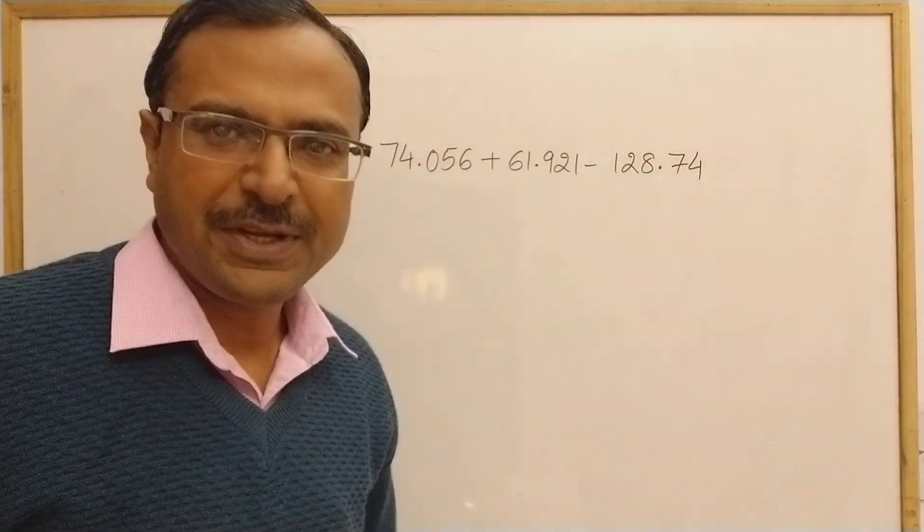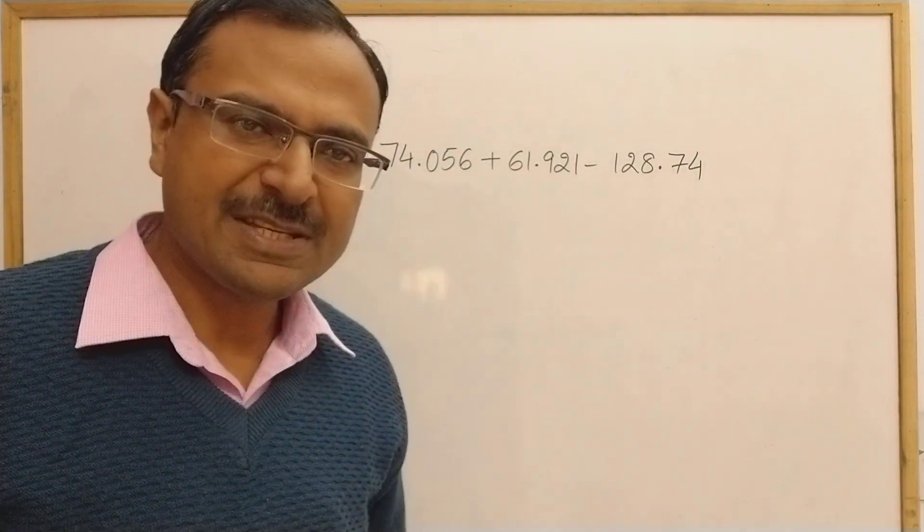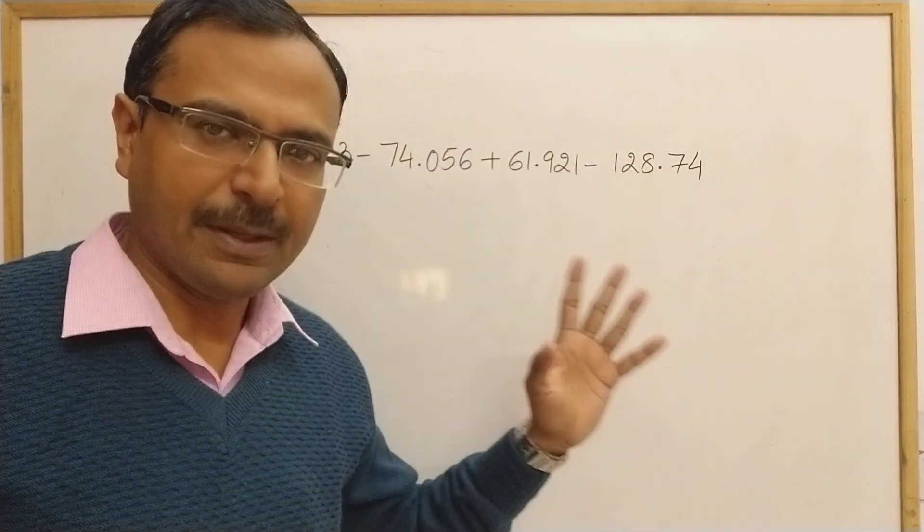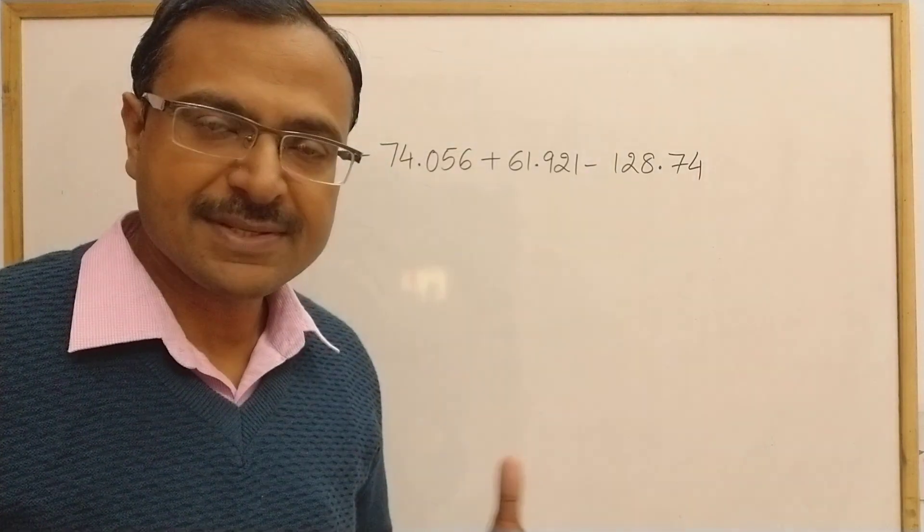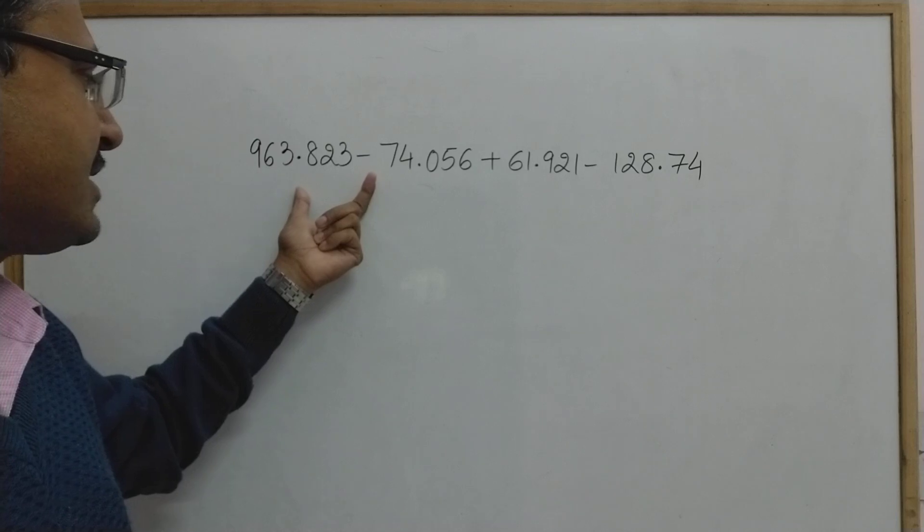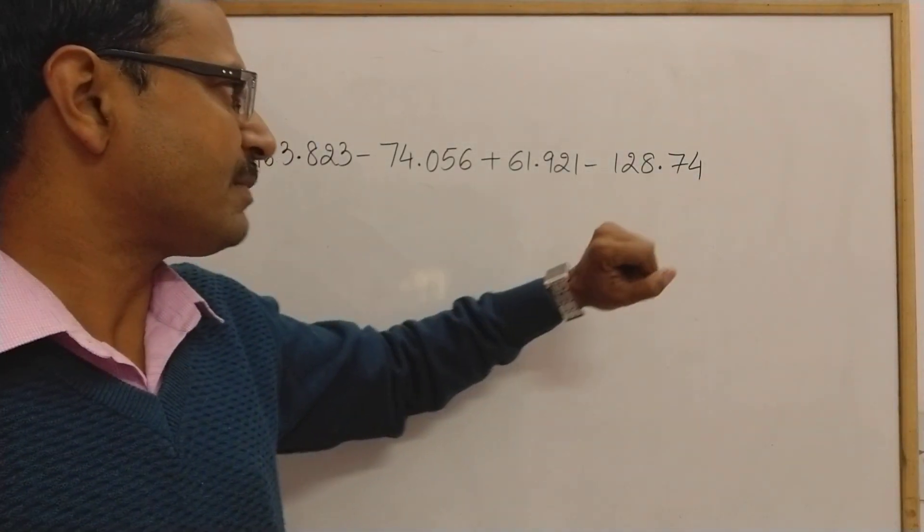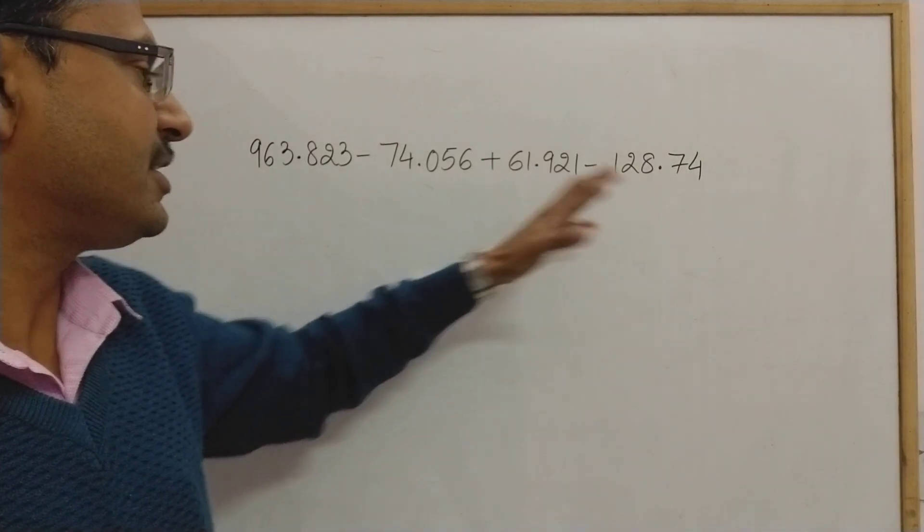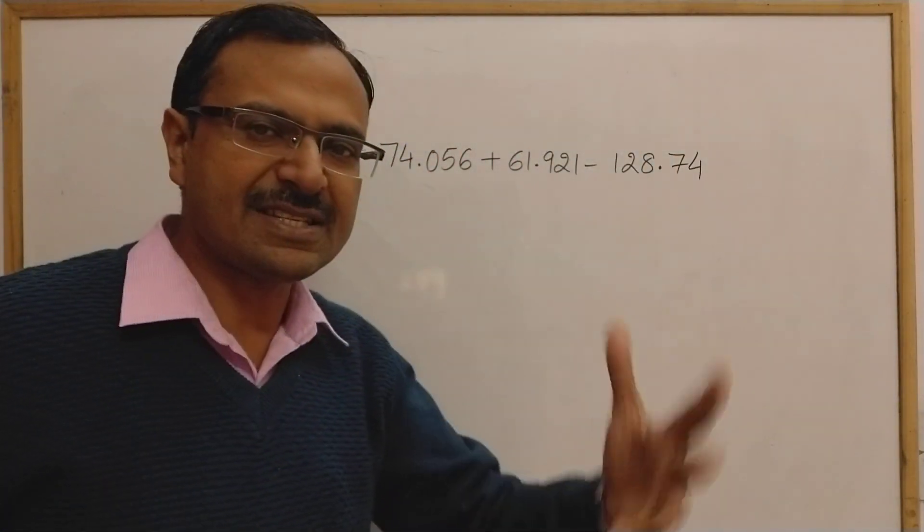Hello friends, in this video I shall take up an amazing problem of decimals addition and subtraction of decimal numbers. These are numbers as large as 963.823 - here we have three decimal places. Here we have two decimal places, here we have two digits before decimal and three digits before decimal. It's all a mixture of different types of decimal numbers.